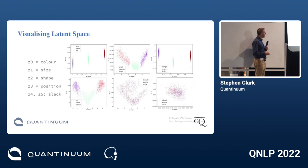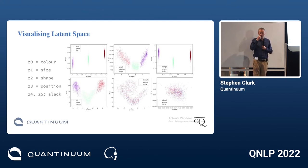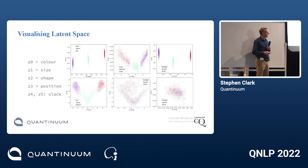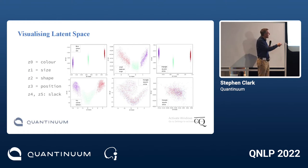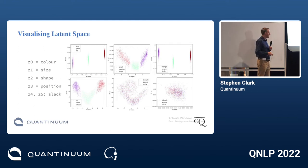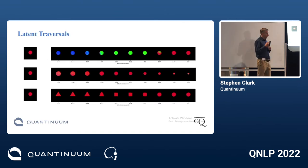For sizes the effect is a little less discrete but still clear: the small instances cluster on the left, medium in the middle, and large on the right — with a nice ordering where medium sits between small and large. We see a clean clustering effect for shape as well, and a similar story for position. The final two plots are for the slack dimensions, which we don't want to encode any conceptual information — and indeed they look random, which is what we're looking for.